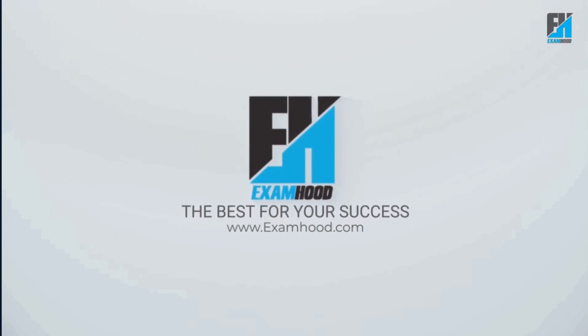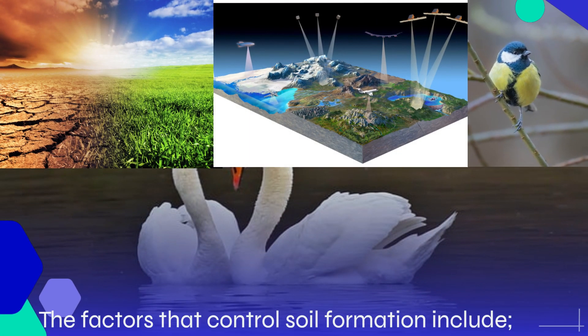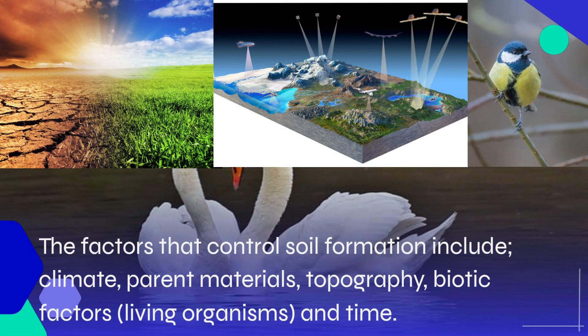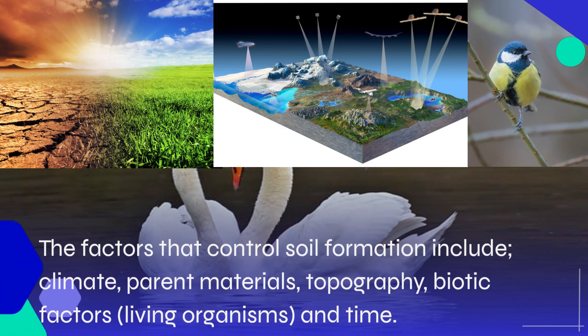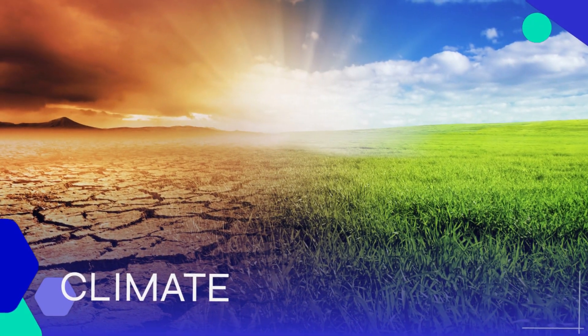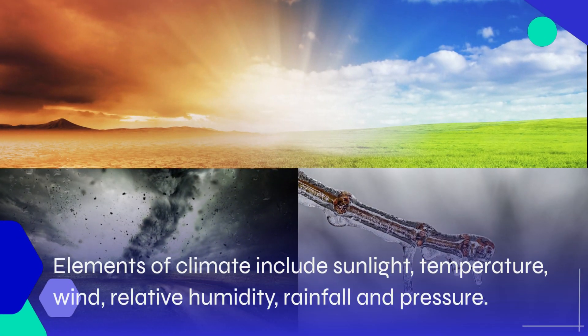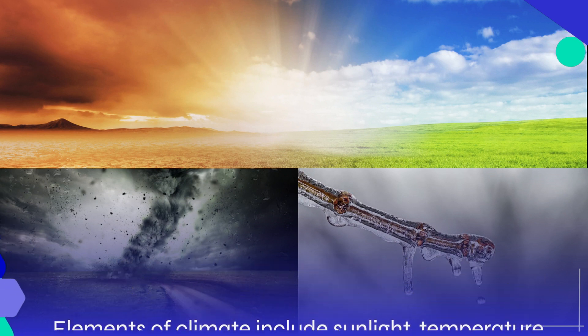Today we are going into factors of soil formation. The factors that control soil formation include climate, parent materials, topography, biotic factors, living organisms, and time. Climate refers to the average weather condition of a place measured over a long period of time. Elements of climate include sunlight, temperature, wind, relative humidity, rainfall, and pressure.